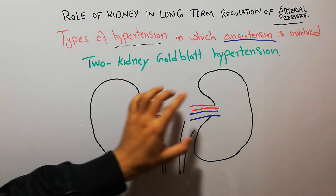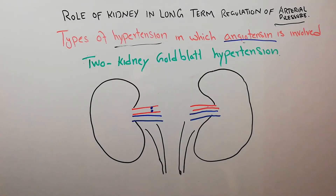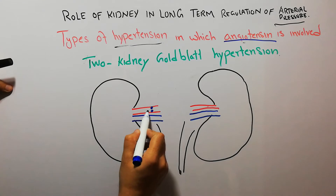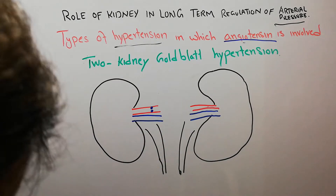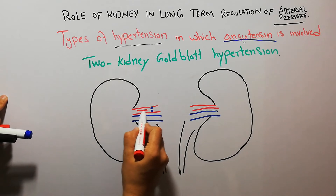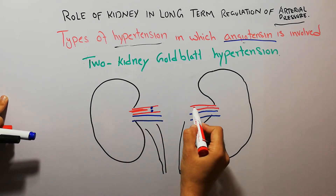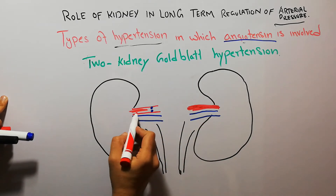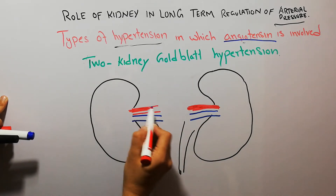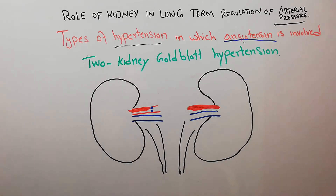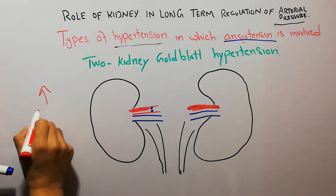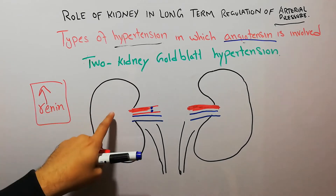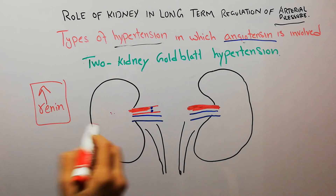Coming back to 2-kidney Goldblatt hypertension: when one kidney is clamped and the second kidney remains intact, due to clamping of the renal artery, blood flow to the clamped kidney decreases. The blood flow in the normal kidney remains full, but in the clamped kidney it has slightly decreased due to constriction. Once blood flow to the kidney decreases, there will be secretion of renin — renin secretion will increase in the clamped kidney because blood flow to it has dropped.